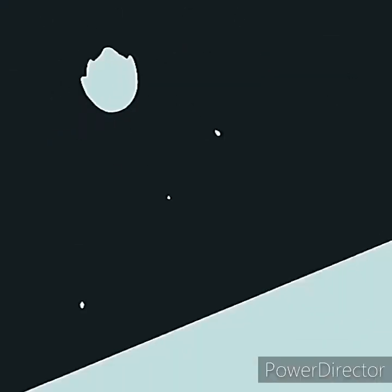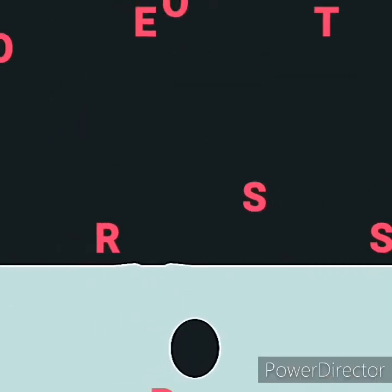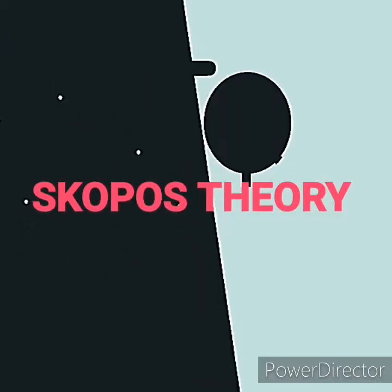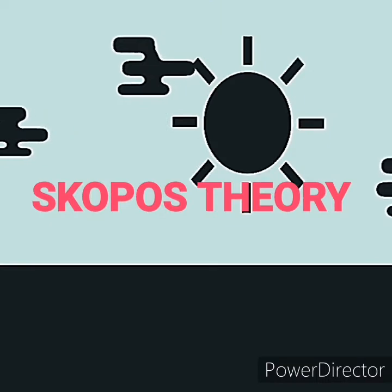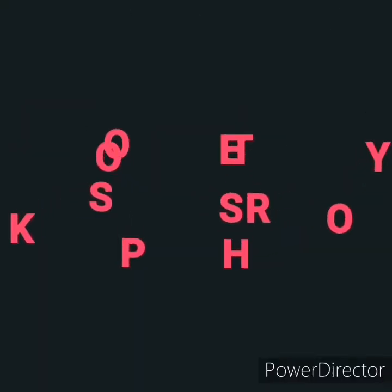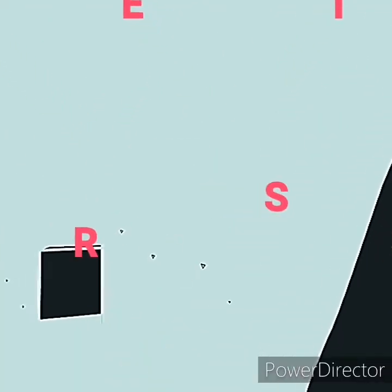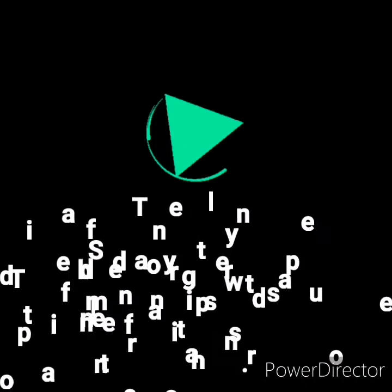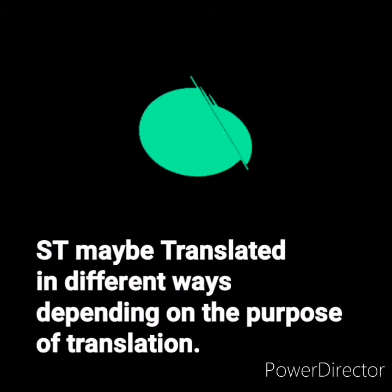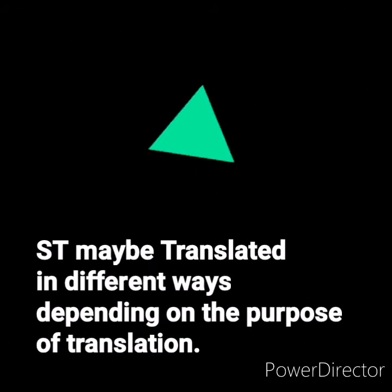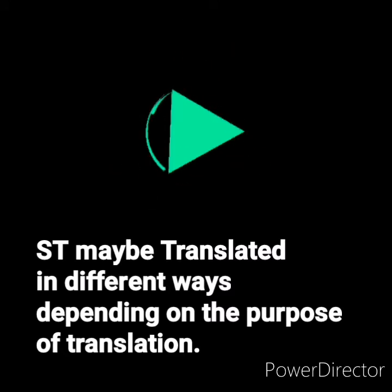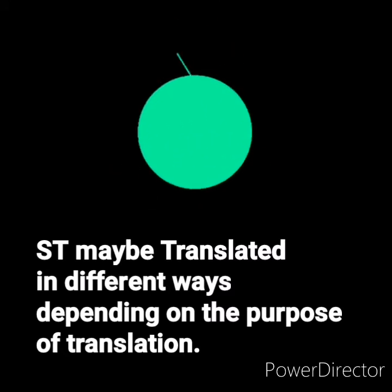But just like any other theories, Skopos Theory has been questioned and criticized. The most important advantage this theory has is that it permits the possibility that the same text may be translated in different ways depending on the purpose of translation.